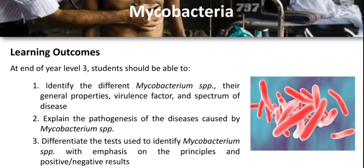The learning outcomes for this lesson: at the end of year level 3, students should be able to identify the different mycobacterium species, their general properties, virulence factors, and spectrum of disease; explain the pathogenesis of diseases caused by mycobacterium species; and differentiate the tests used to identify mycobacterium species with emphasis on the principles behind positive or negative results.